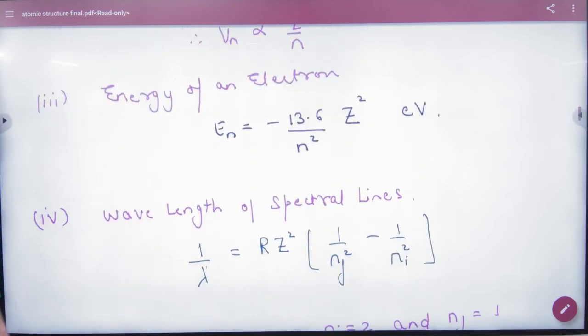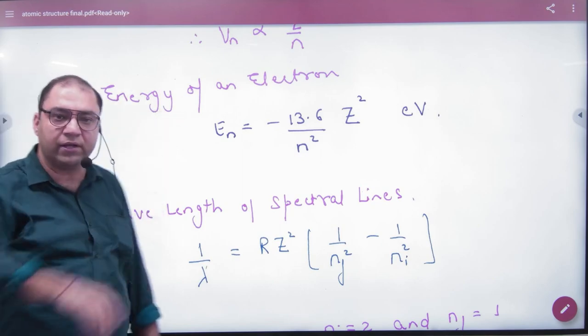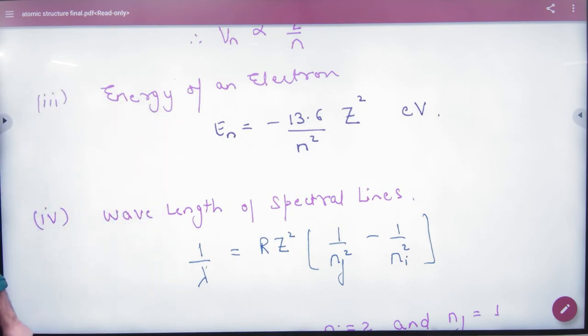Next is energy of electron, which is very important. It's minus 13.6 by N², so minus 13.6 per N² times Z². So it's minus 13.6 Z² per N² electron volts.